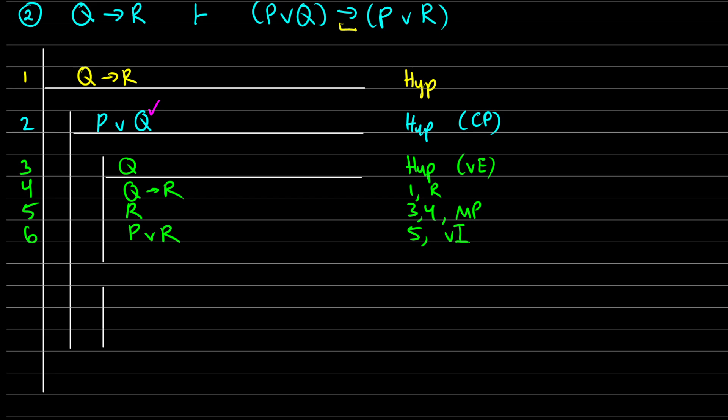Well, we're trying to get P or R. That's sort of our goal here. So I'm going to introduce another hypothesis once again for or elimination. Okay. I am assuming P this time. So this is line seven.